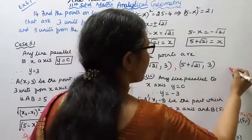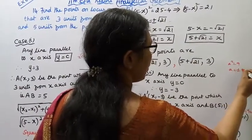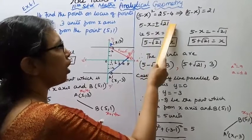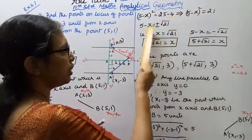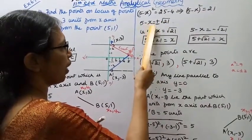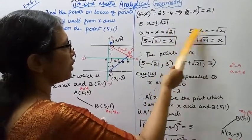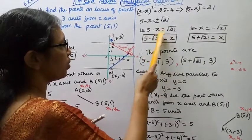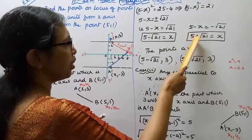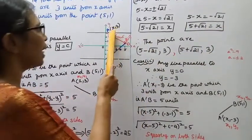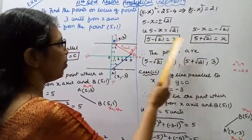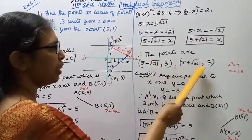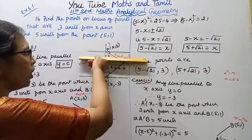Taking square root on both sides: 5 - x = ±√21. Taking the two cases: 5 - x = +√21 gives x = 5 - √21, and 5 - x = -√21 gives x = 5 + √21. Therefore the two points from Case 1 are (5 - √21, 3) and (5 + √21, 3). Case 1 complete — moving upward 3 units.